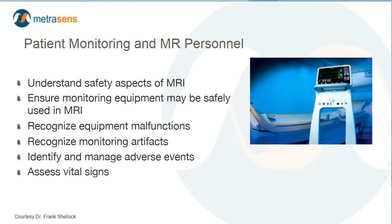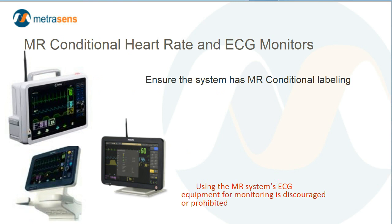In whatever monitoring system you choose, it's important to ensure that it is a system which has been designed for use in Zone 4 and that the manufacturer has tested it and properly labeled it as MR conditional. It's also important to point out that an MRI system's EKG hardware and software is designed for data acquisition purposes and cannot be used for the physiologic monitoring of a patient. In many cases, the MR system's user manual will clearly state that the ECG components are not to be used for physiologic monitoring of patients.